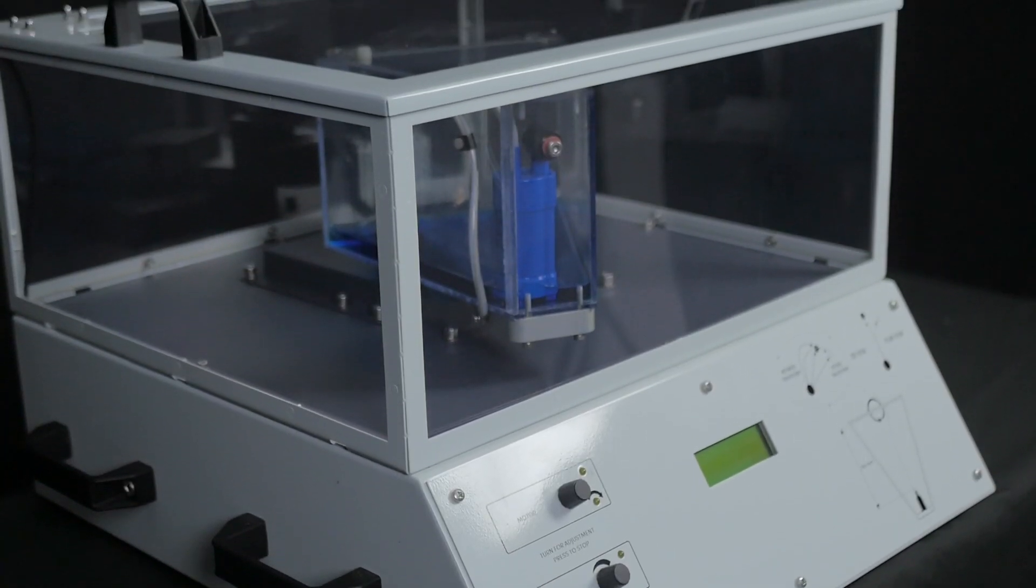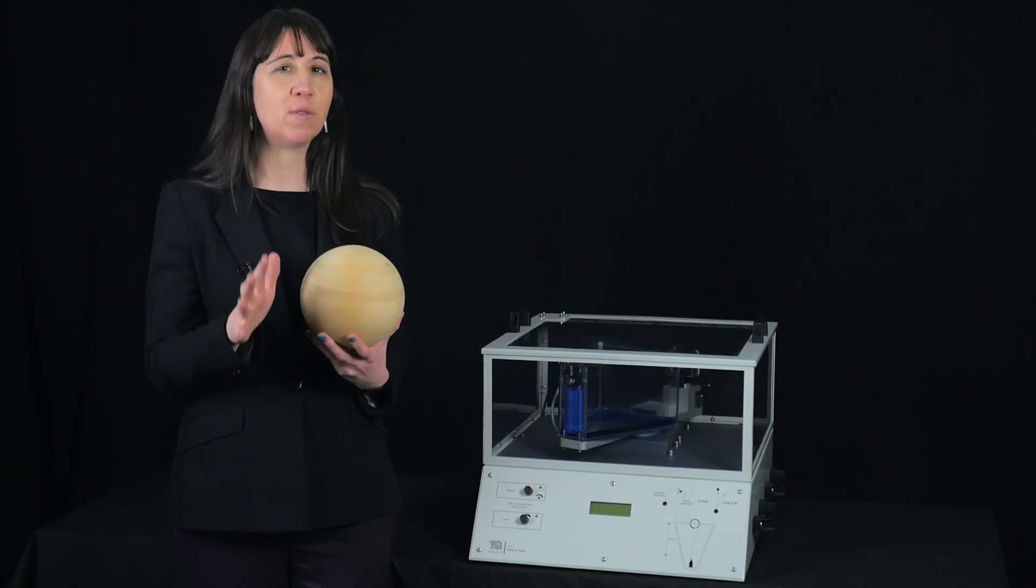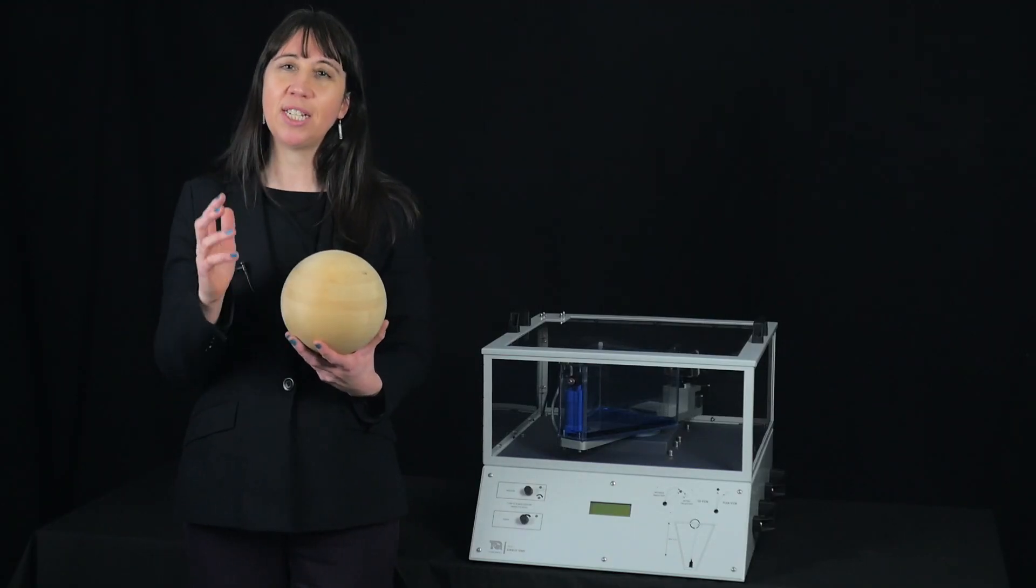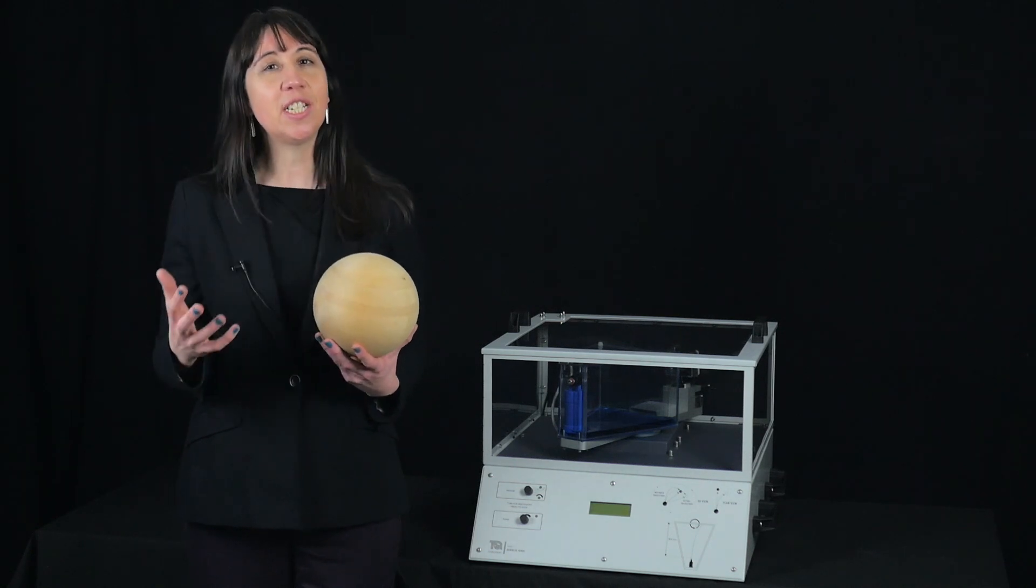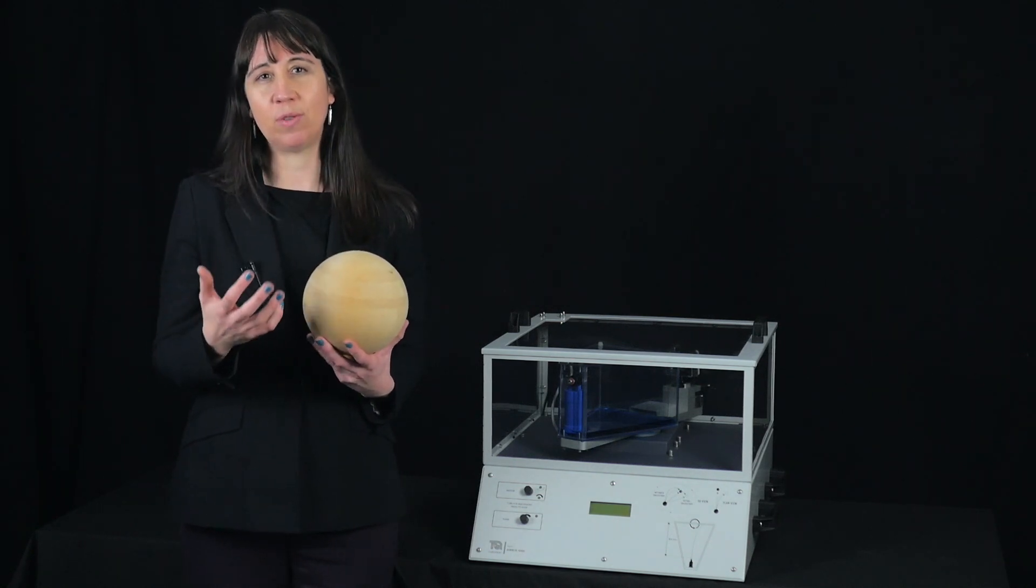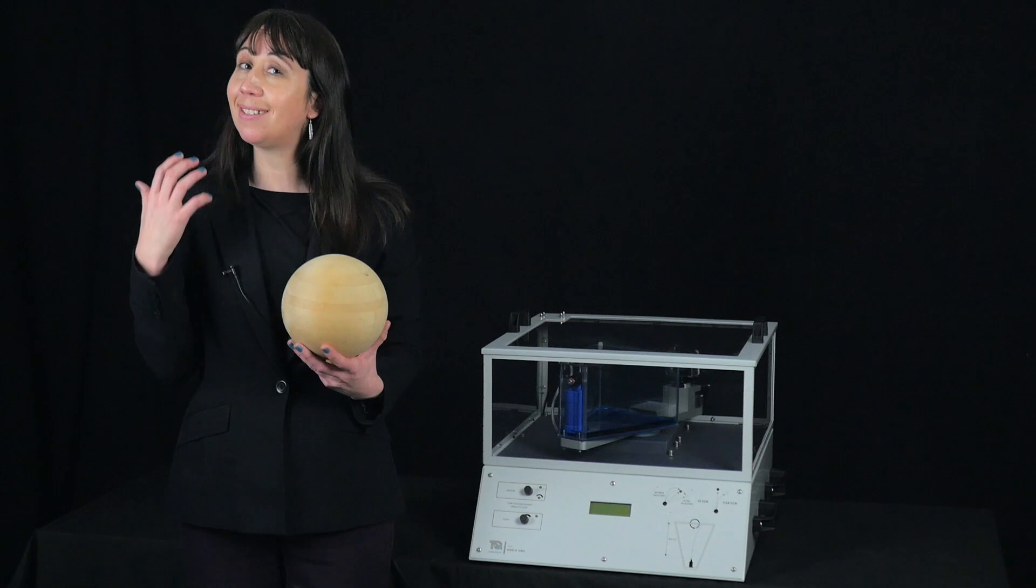The Coriolis Force is one of three fictitious forces which affect the motion of an object in a rotating frame of reference. Fictitious forces are unreal forces which arise from motion and can seem real.